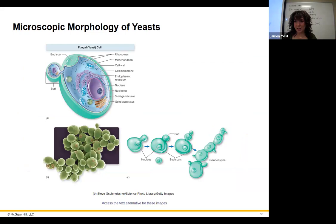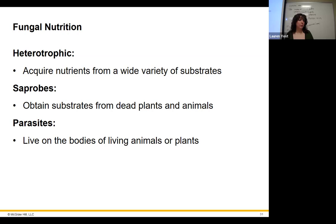Here's a picture of how yeasts bud — they use mitosis. The initial cell needs to grow up and become mature again before it can bud, and it's not always equal or even division.